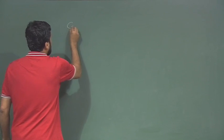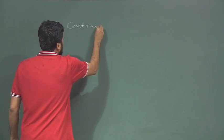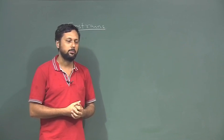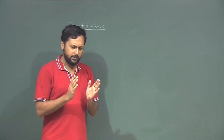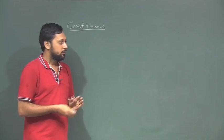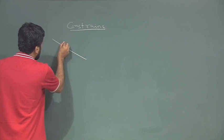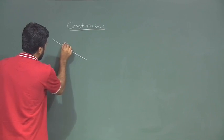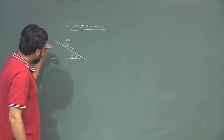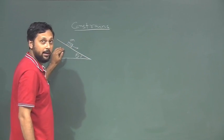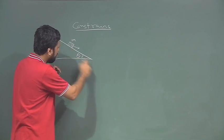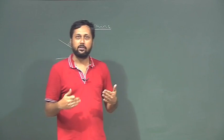A constraint is anything that restricts the motion of an object — whether a rigid body or a point particle. For example, a mass m sliding on an inclined plane at angle theta must stay on that plane — that is a constraint. Similarly, I am standing on the ground; that is a constraint I have.